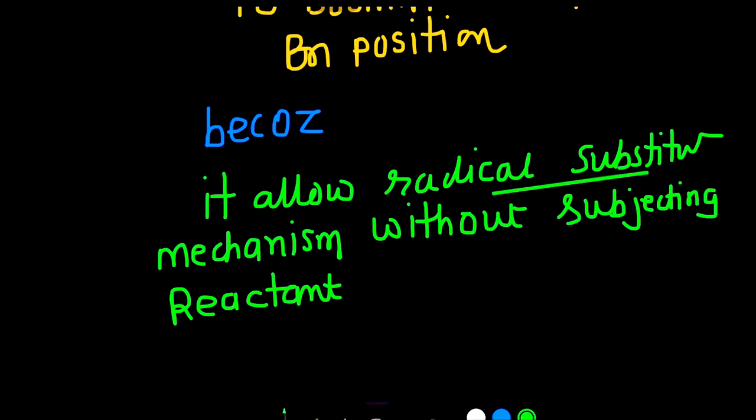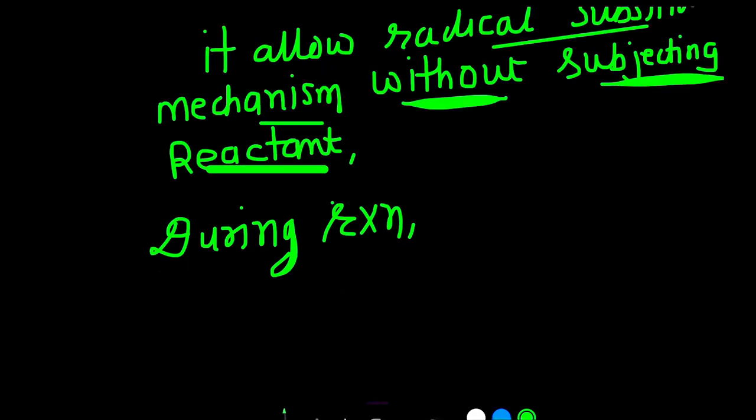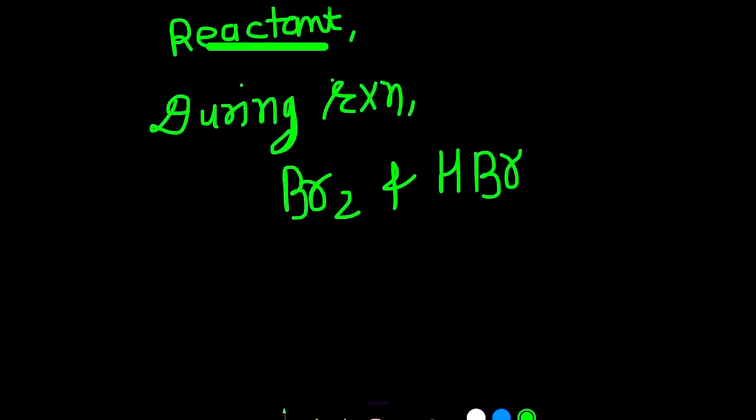In simple words, due to N-bromo-succinimide in reaction, it will not produce the high concentration of Br2 and HBr that could be added to double bond. Now, this is the main advantage of this reaction.